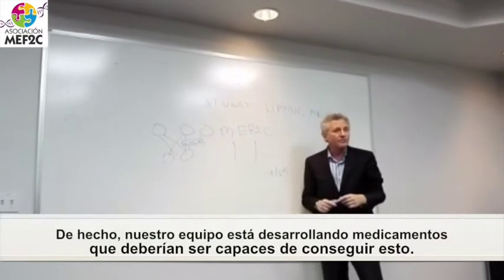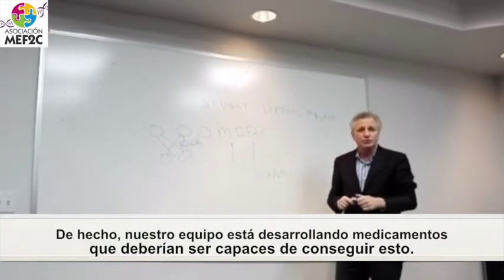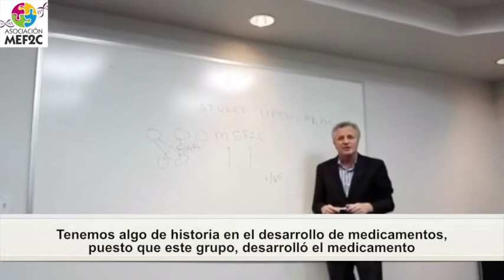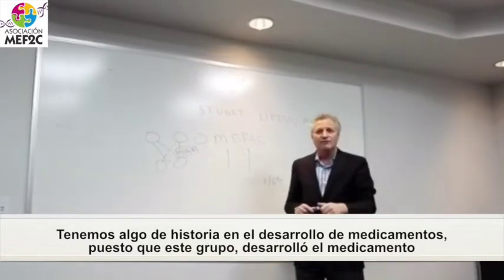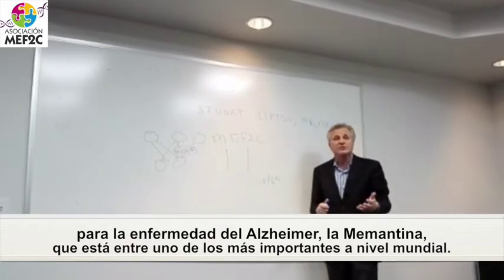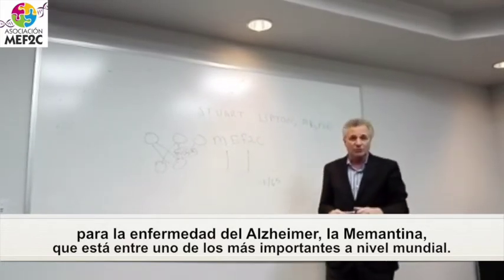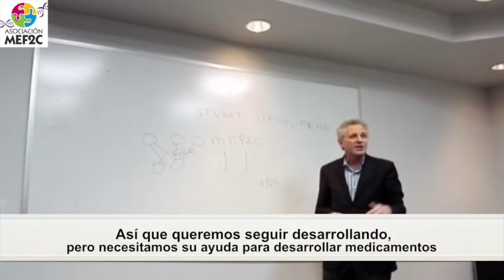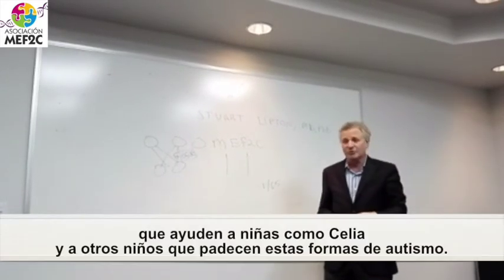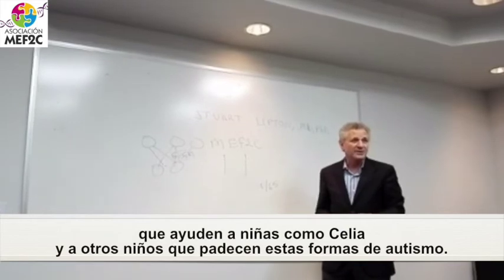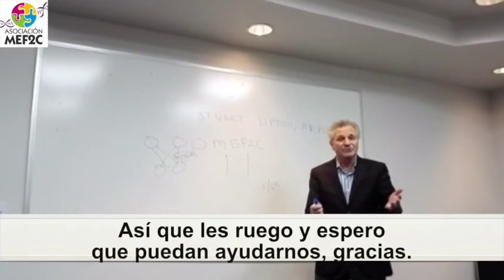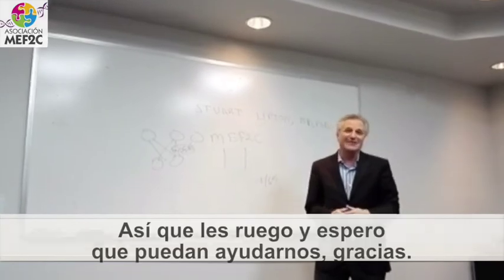Our group is developing drugs that should be able to do this. We have some history in drug development — ours is the group that developed a drug for Alzheimer's disease called Memantine, or Namenda. It's now approximately the 20th best-selling drug in the world. So we know how to develop drugs, but we need your help to develop drugs to help little girls like Celia, and little boys also in my practice, that have these forms of autism. I appeal to you, and I hope you can help us. Thank you.